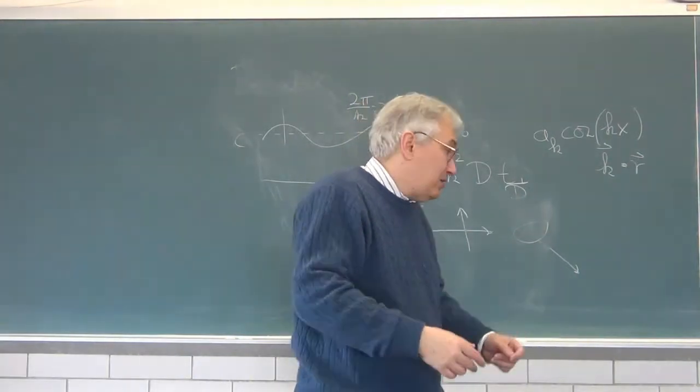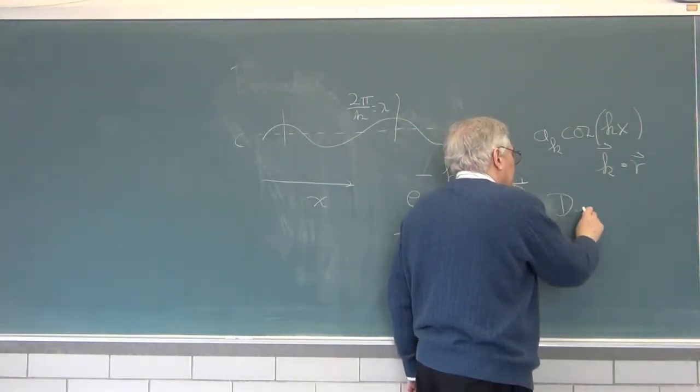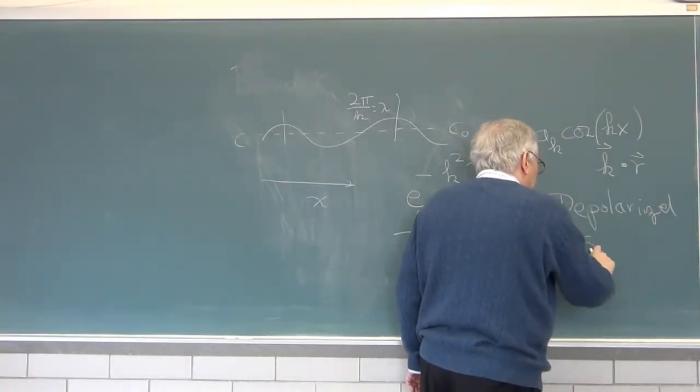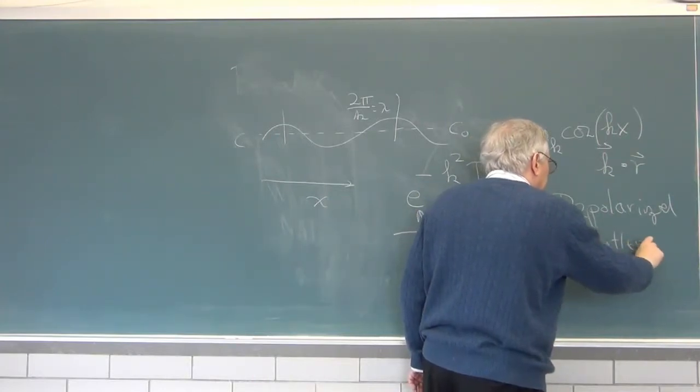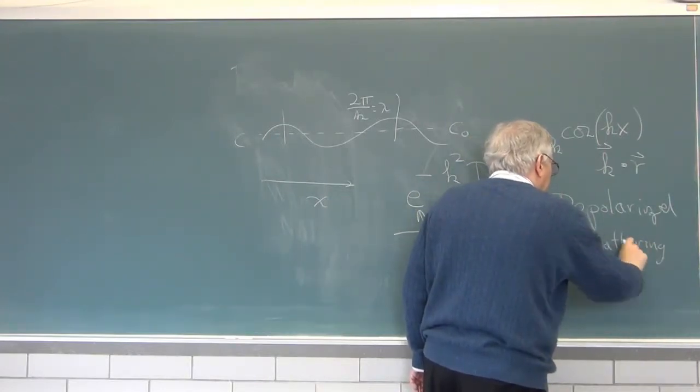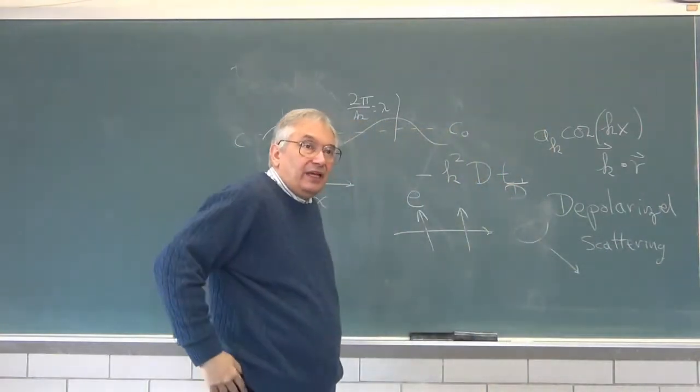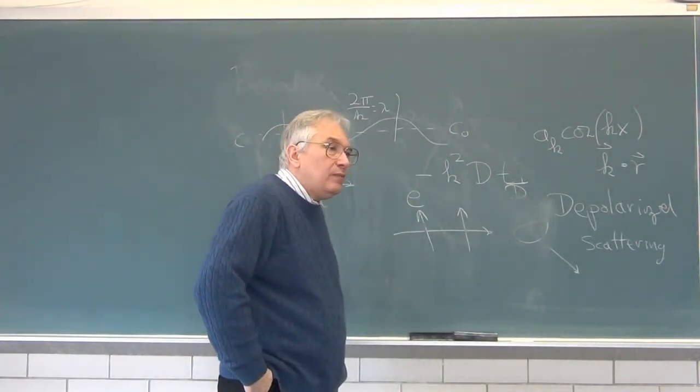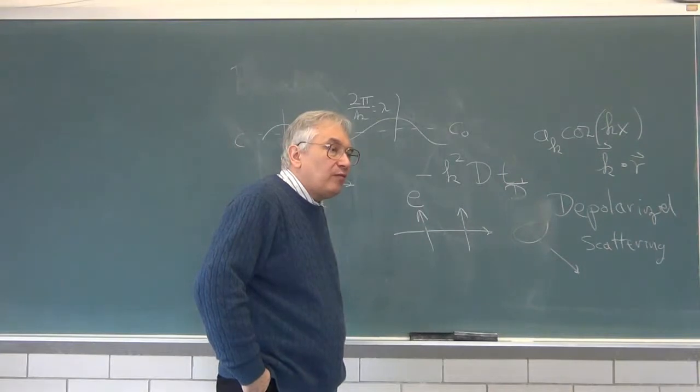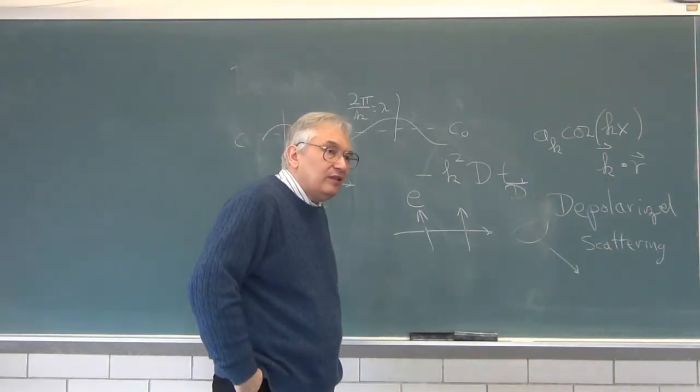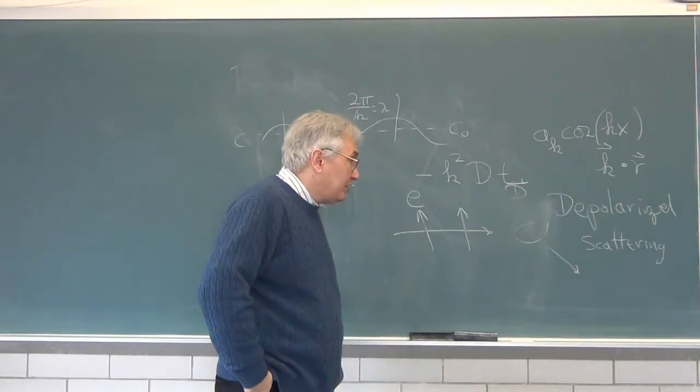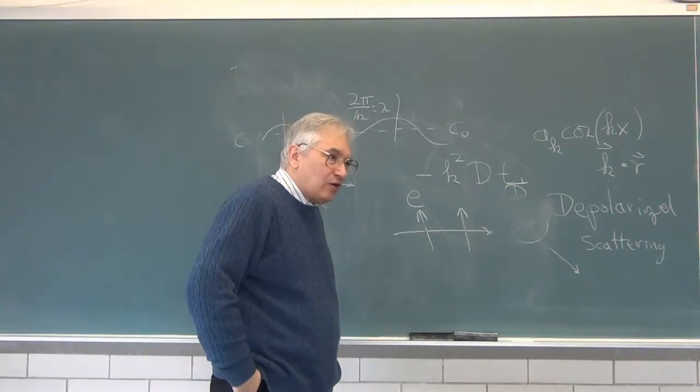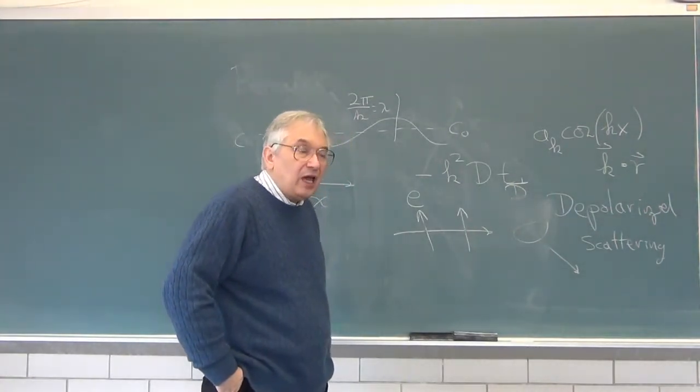That's depolarized light scattering. There are other ways of getting depolarized scattering. If you simply scatter light from a rough surface, some of it comes off. But we're talking about molecular scattering. Depolarization is often quite weak, and you have to work very hard to isolate the depolarized light.